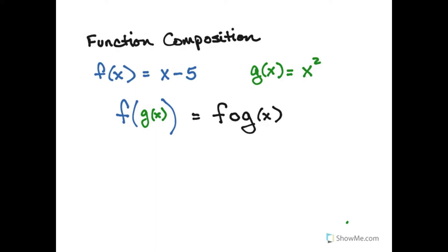If I do that here f of g of x is f of x squared. So I put x squared in for x in the expression for f. The expression for f is x minus 5. So when I put x squared in for x I get that f of g of x is x squared minus 5.